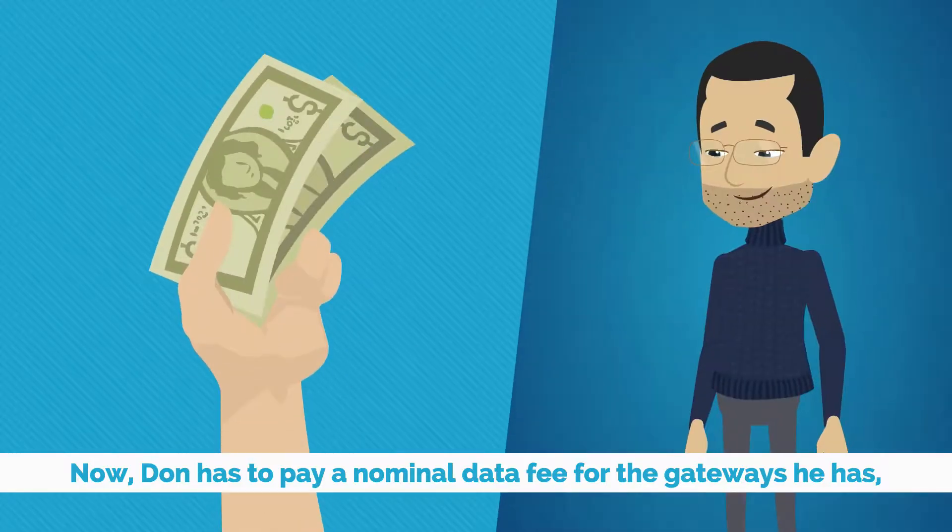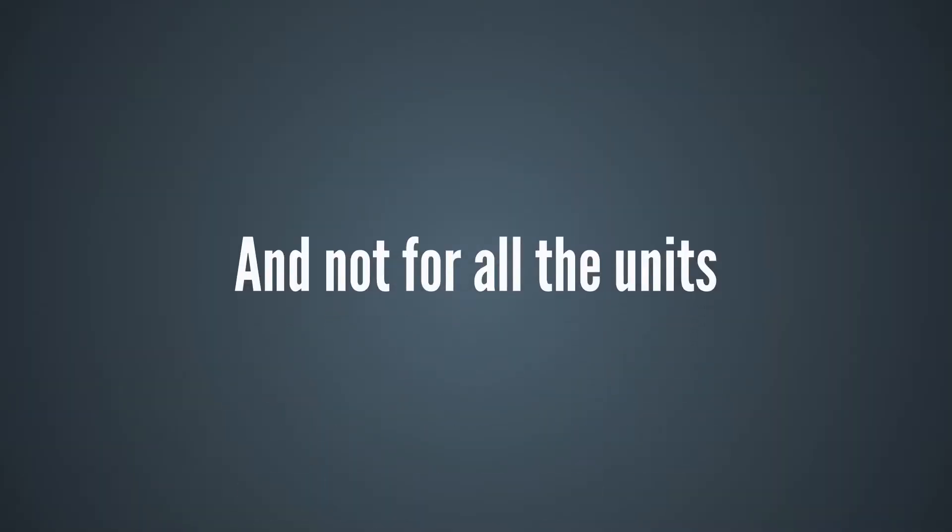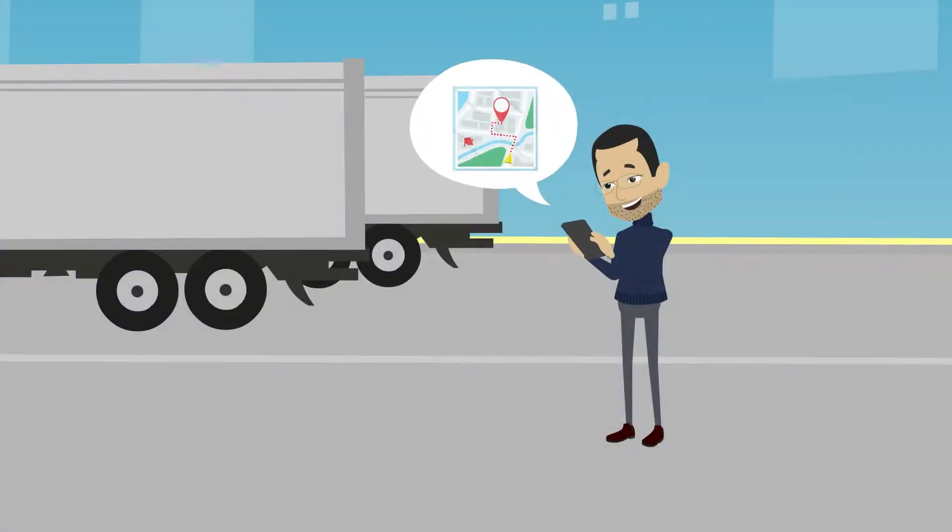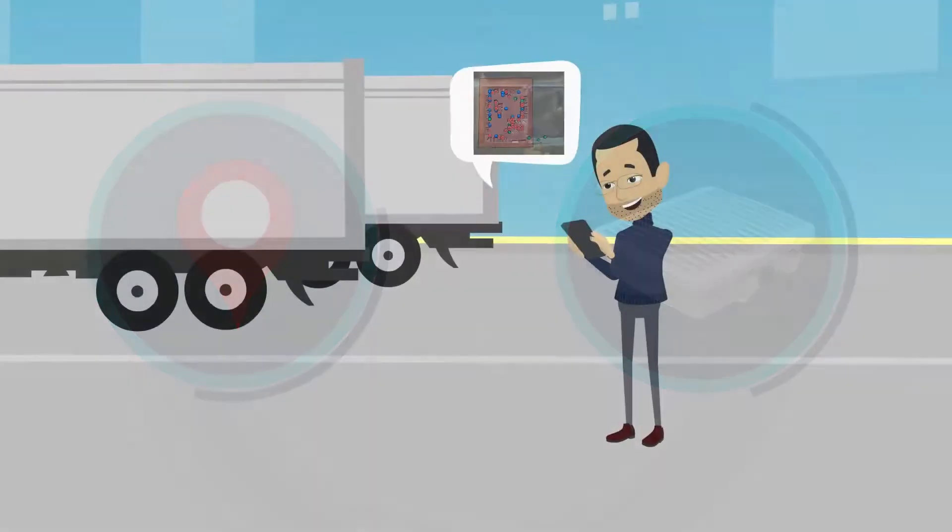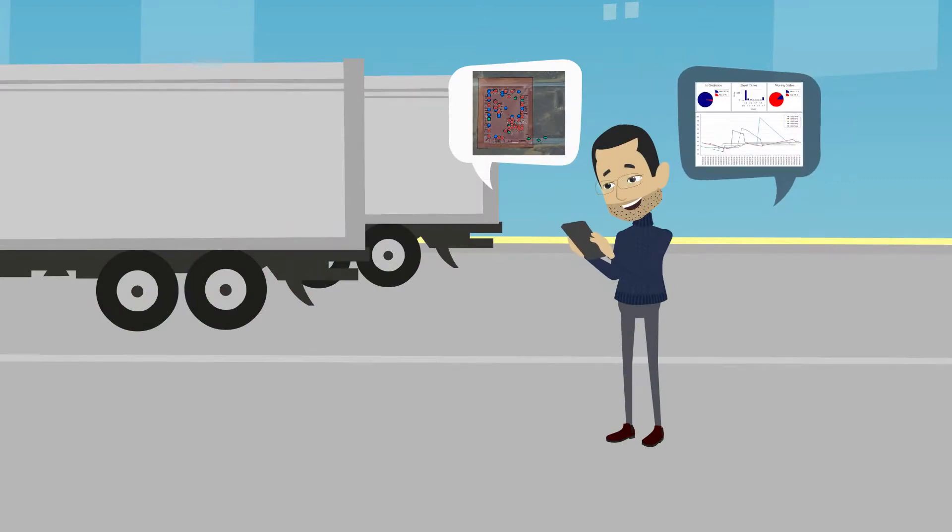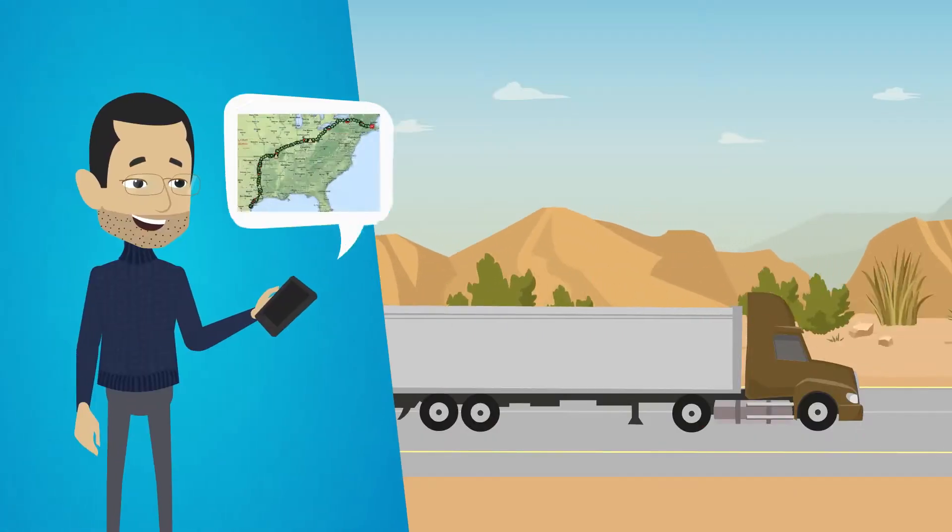Now, Don has to pay a nominal data fee for the gateways he has, and not for all the units. Don now has plenty of data, including location from 10-minute reporting messages, start and stop info, and sensor input, but also has the exact information about every yard along with all the trip information.